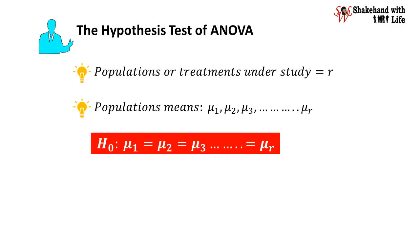Now the null hypothesis H0 under ANOVA states mu1 equal to mu2 equal to mu3 and so on up to muR.